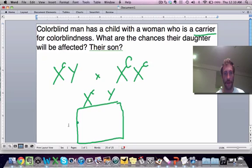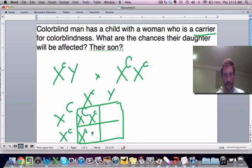Okay, so let's make a Punnett square for this couple here. X little c, dad, is up here, and X big C, X little c. Okay, so X big C, X little c, X little c, X little c, X big C, Y, X little c, Y.